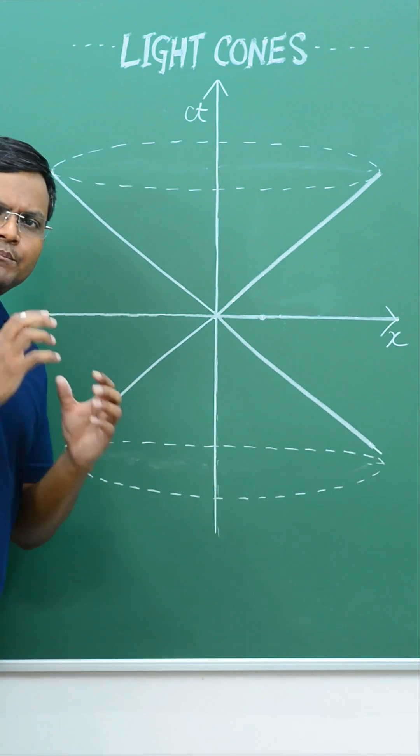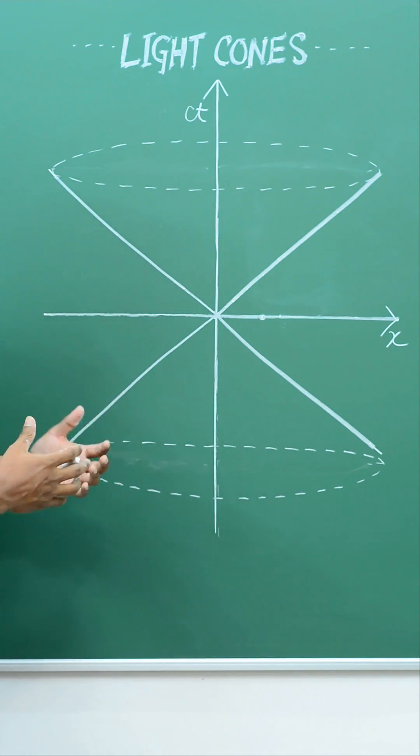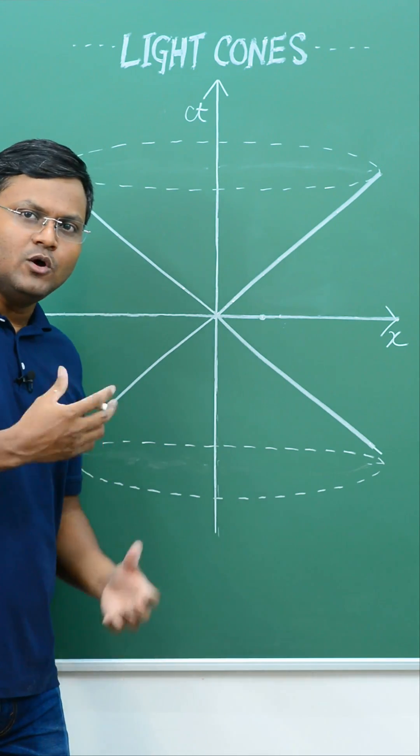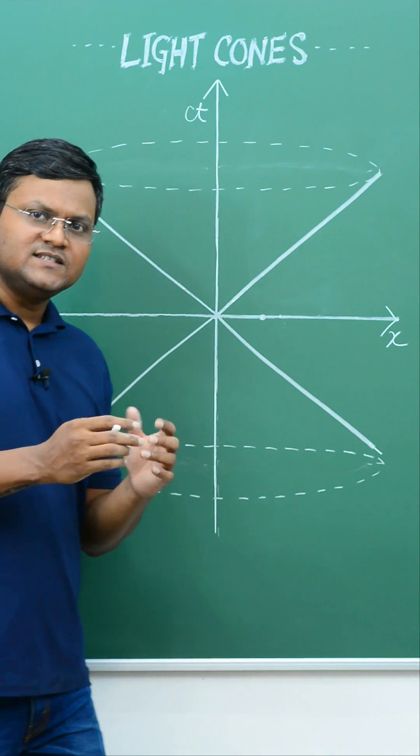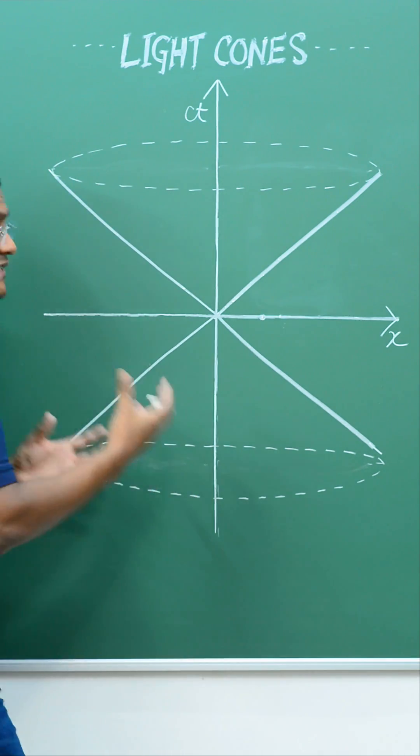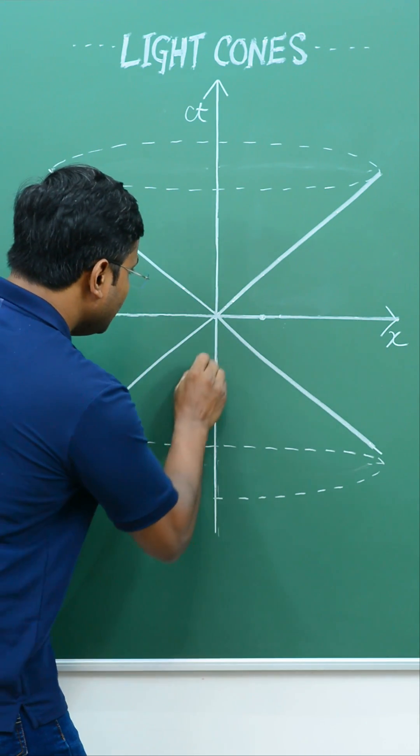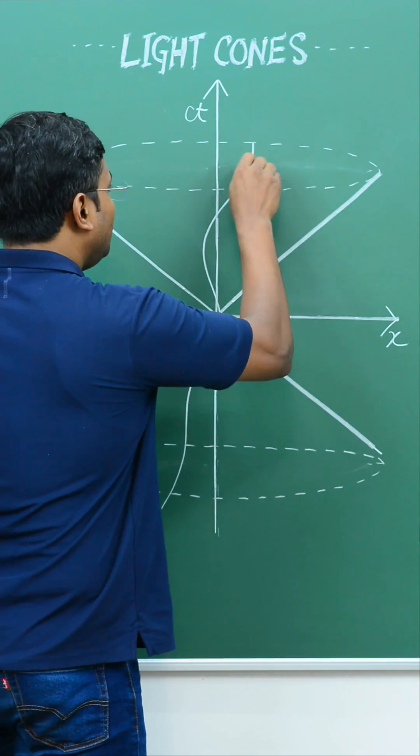These light cones are very important in relativity because they represent a barrier, a causal structure in our space-time since nothing can travel faster than the speed of light. So any physically possible trajectory or world line must always lie within this light cone.